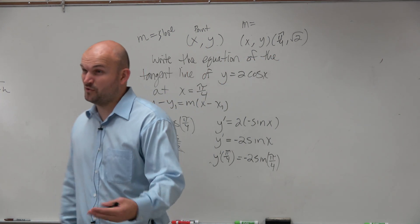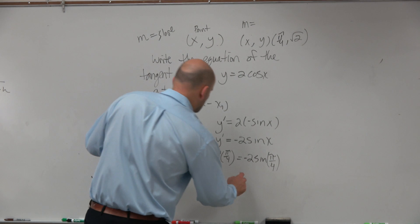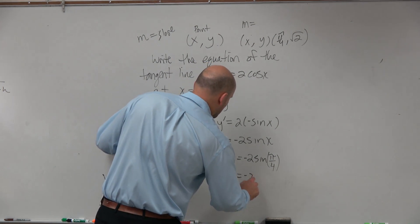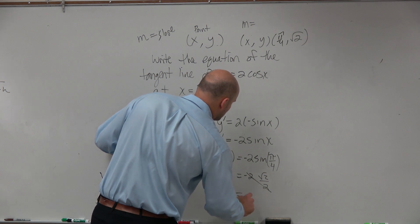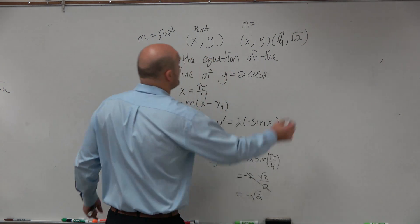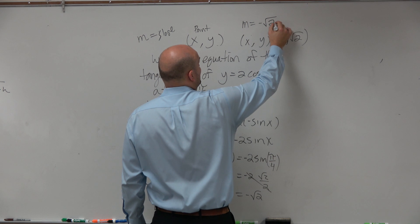Again, sine of pi over 4 is square root of 2 over 2. So I'm left with negative 2 times the square root of 2 over 2. 2's divide out. I'm left with a negative square root of 2. So my slope is the negative square root of 2.